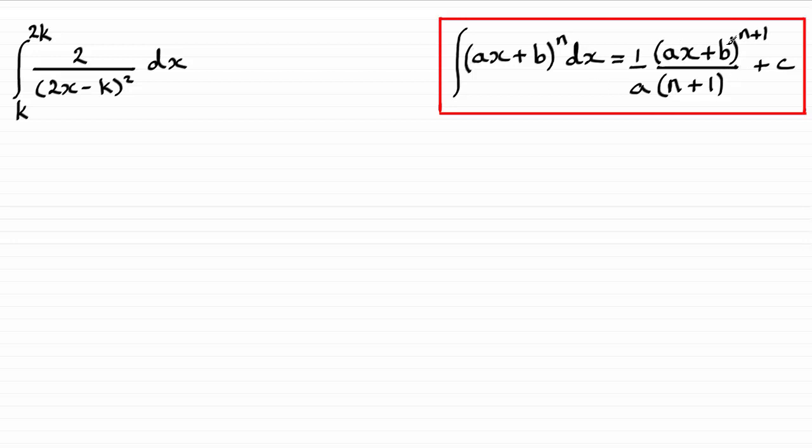So if you're unsure of this, just check out my other videos on integrals that have this form. And we can now turn this integral into this form, because if we just pull out the constant 2 in the numerator, we've got the integral then of 2x minus k all to the power minus 2, because we can bring that up to the top. We're integrating that with respect to x, with the limits going from k to 2k.